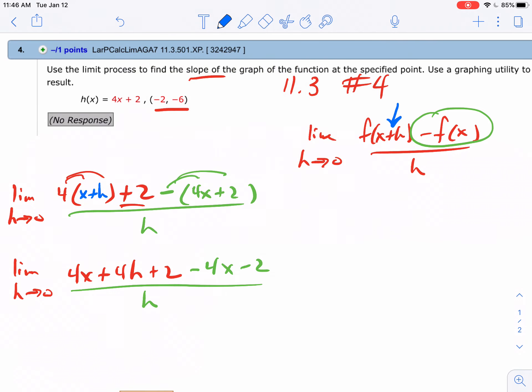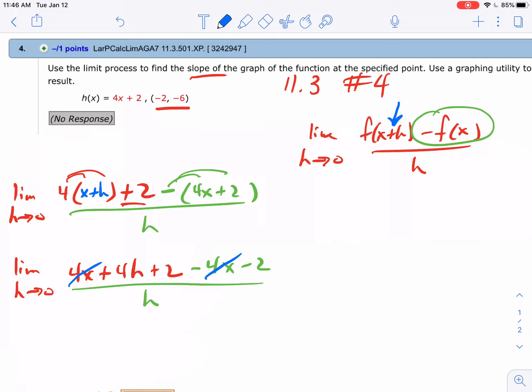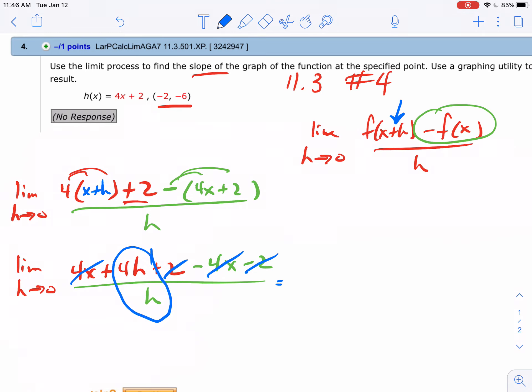Now we're looking for things that in green should have their opposite somewhere else. Negative 4x and positive 4x cancel out, as do negative 2 and positive 2. I'm left with 4h over h, which simplifies to the limit as h goes to zero of 4. I can just cross off the h's.